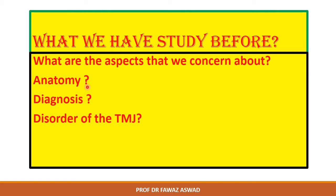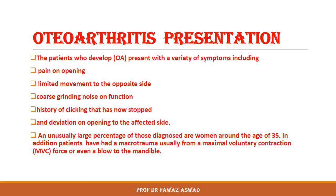Another disorder we studied is osteoarthritis, which involves degenerative changes inside the tissue. From this point, we reviewed the previous lectures and now begin with osteoarthritis — covering how it develops, its clinical symptoms, and what it produces in the TMJ.